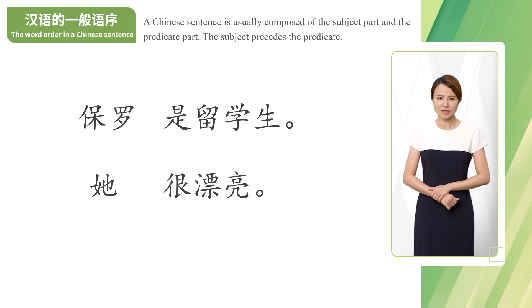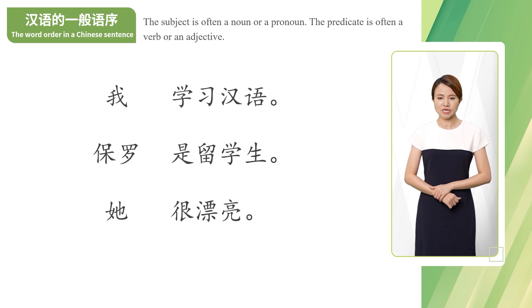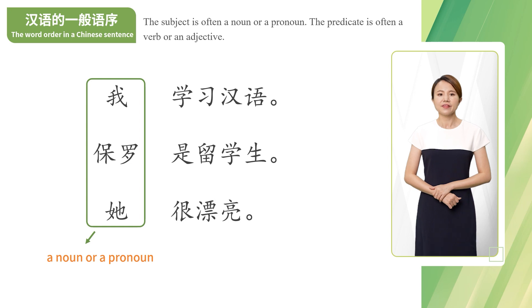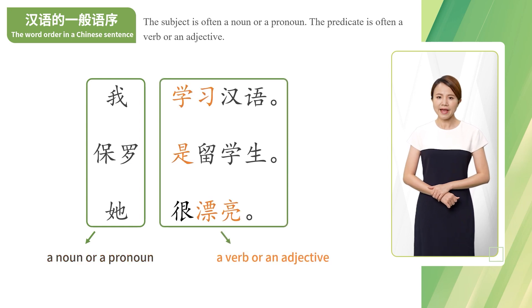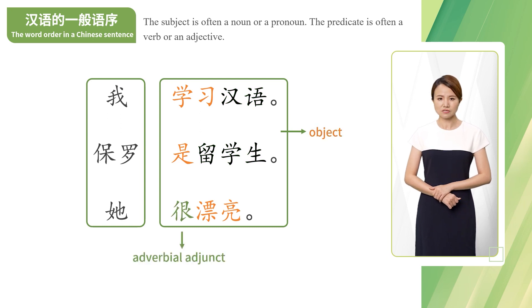保罗是留学生。他很漂亮。保罗 is the subject. 是 is the predicate. 他 is the subject. 漂亮 is the predicate. The subject is often a noun or a pronoun. The predicate is often a verb or an adjective. 留学生 and 汉语 are objects. The adverb 很 functions as an adverbial adjunct to quantify the adjective predicate 漂亮.